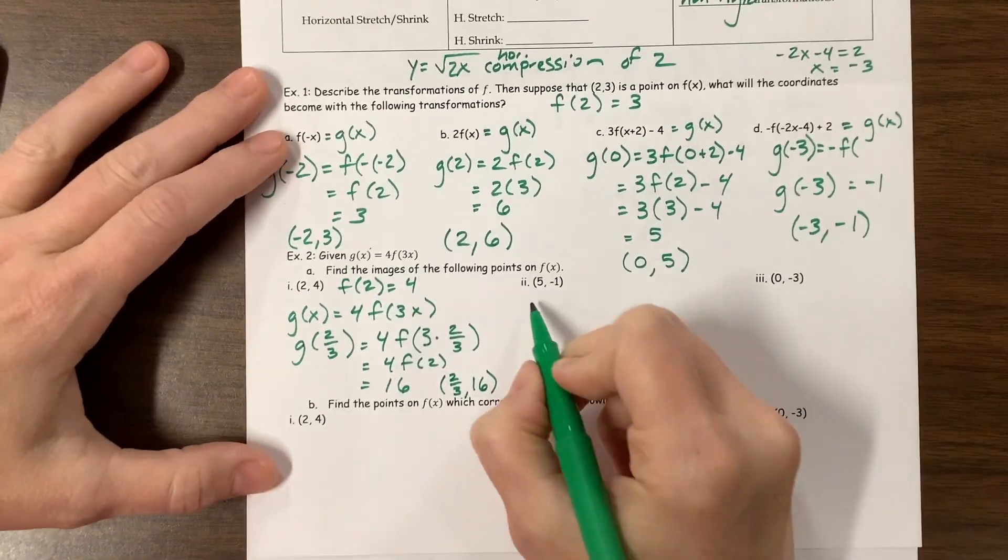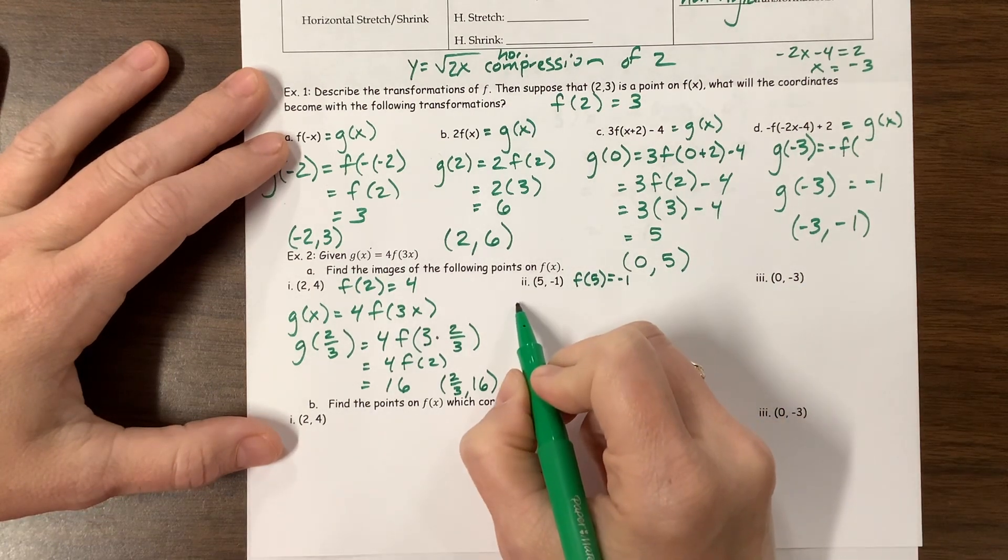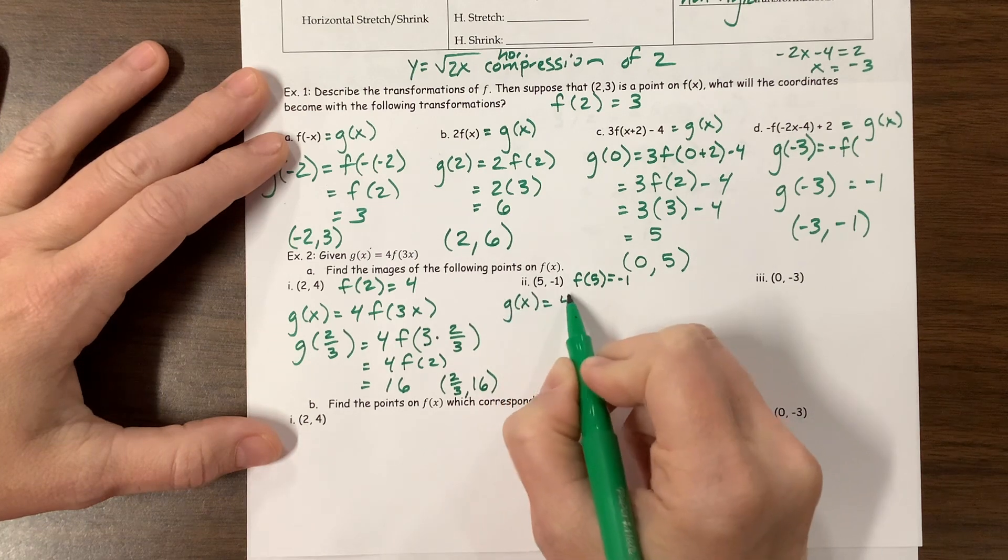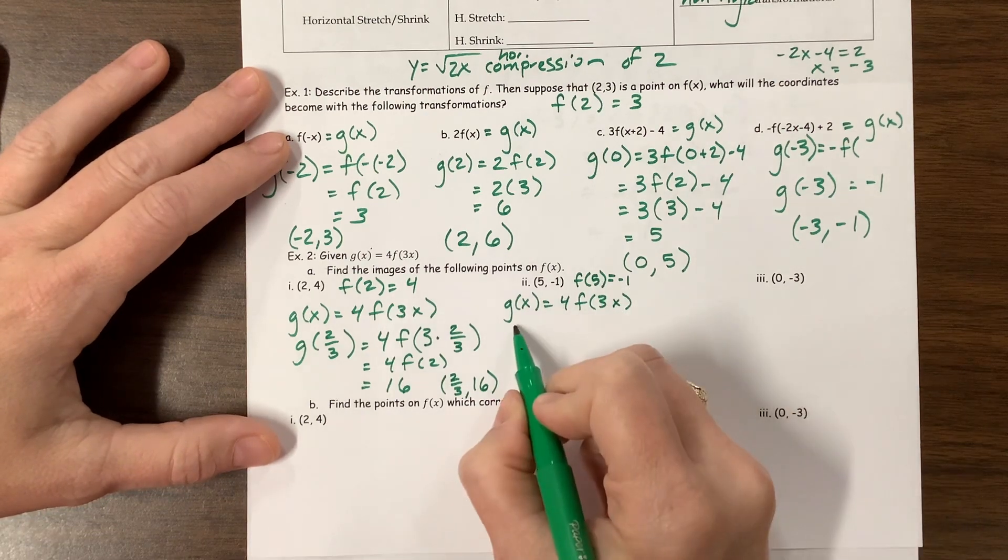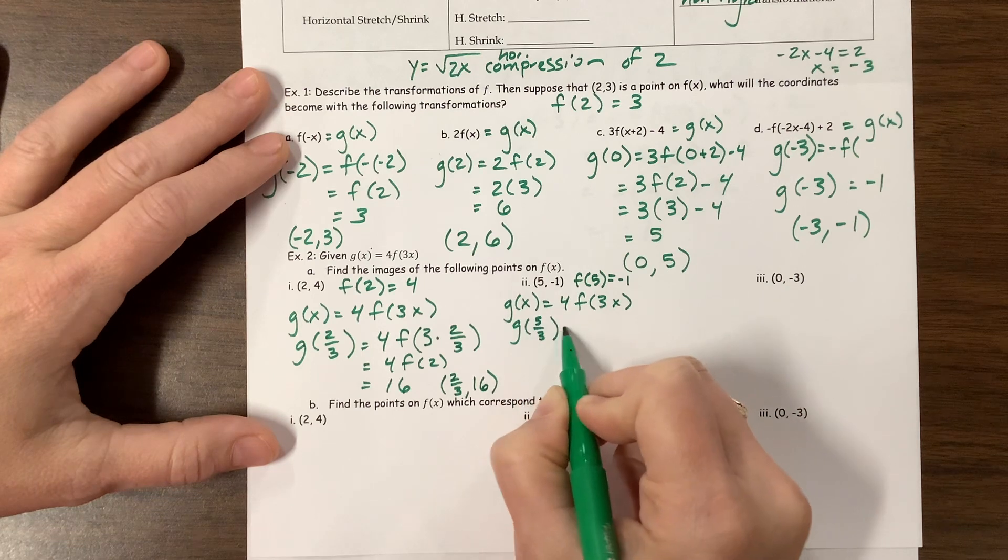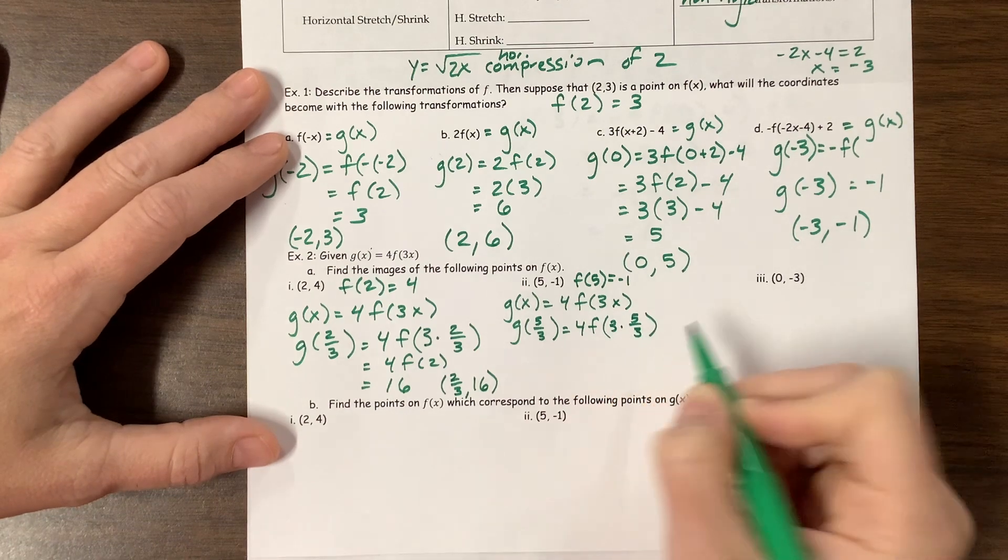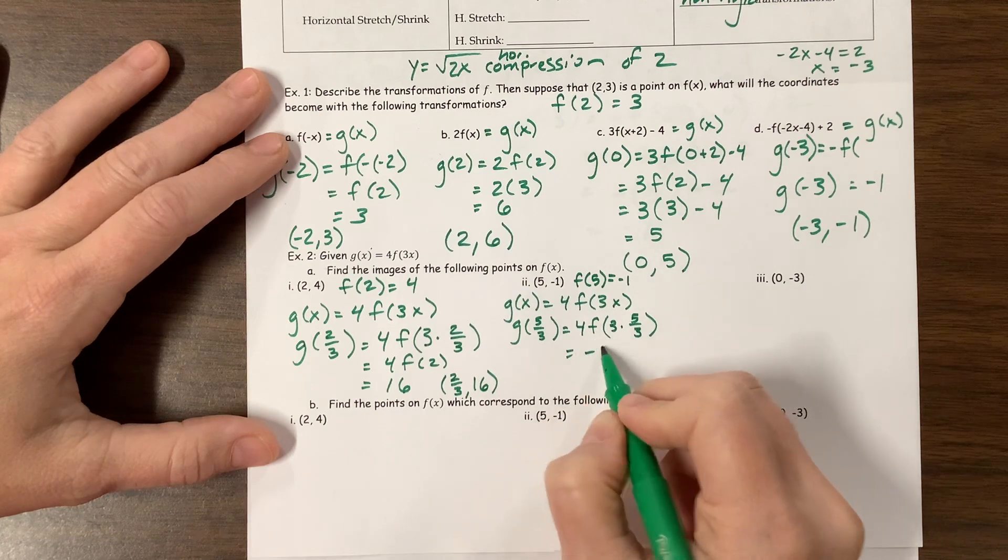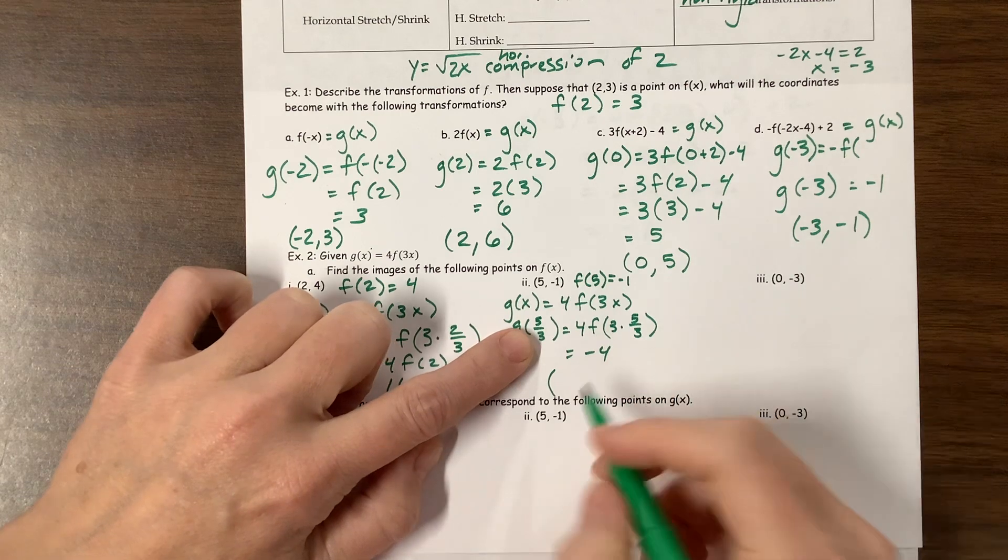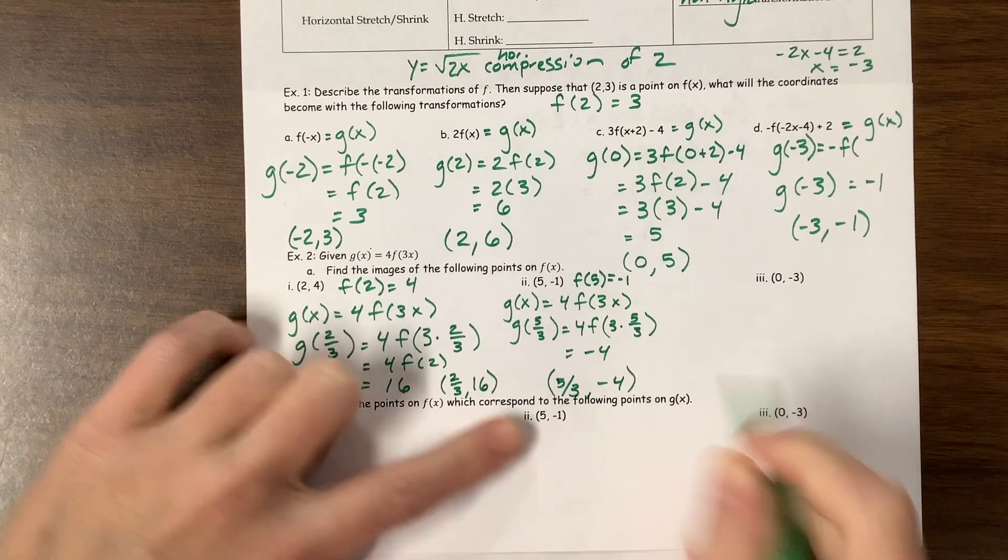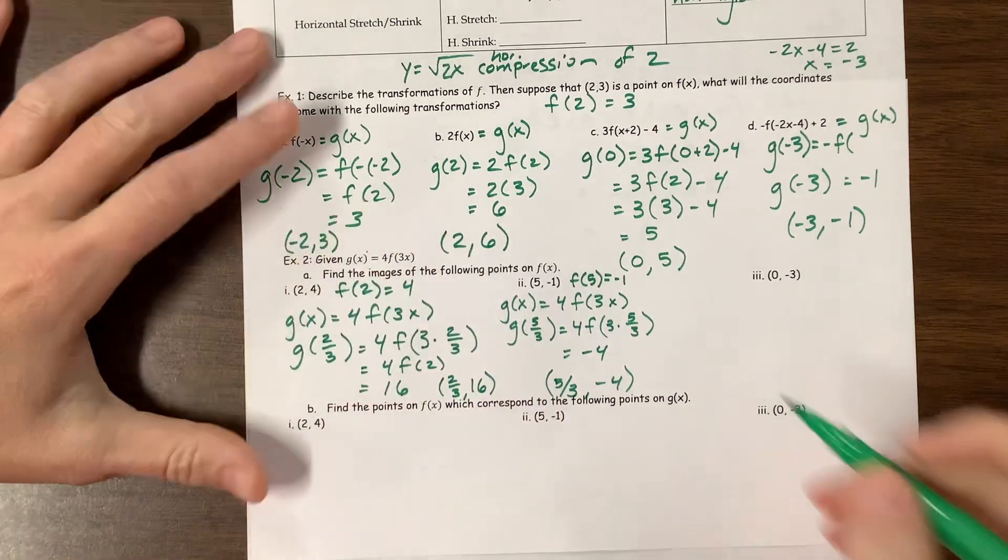2 thirds comma 16. The next one, we know that, what do we know? We know f of 5 is equal to negative 1. So we have g of x is equal to 4 times f of 3x. So what do I need to plug in for x to get a 5? I need 5 over 3. So g of 5 thirds is equal to 4 times f of 3 times 5 thirds. That cancels. f of 5 we set as negative 1. 4 times negative 1 is negative 4. So the point that we care about is the point 5 thirds negative 4. That's a positive 5 thirds negative 4. In general, I don't like fractions written like this, but especially if you have thrown in any x or anything, but I wrote it that way, so my bad, whatever.